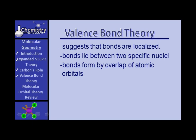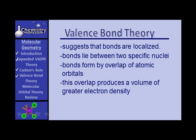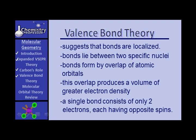Atomic orbitals overlap and form bonds. This overlap produces a volume of greater electron density — where the overlap occurs is where the electrons tend to reside a greater portion of the time. A single bond consists of only two electrons, each having opposite spins, which allows them to pair. In other words, a single bond contains spin-paired electrons.